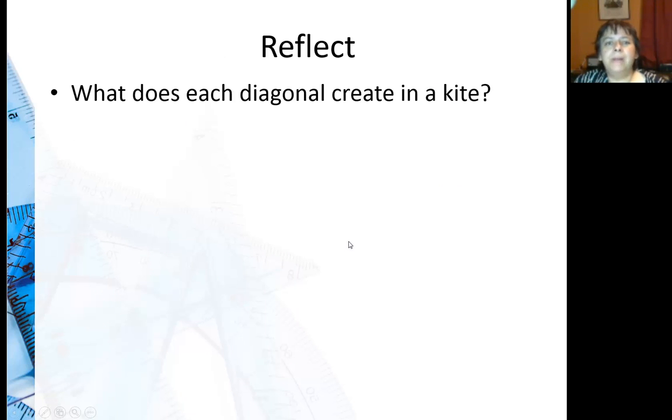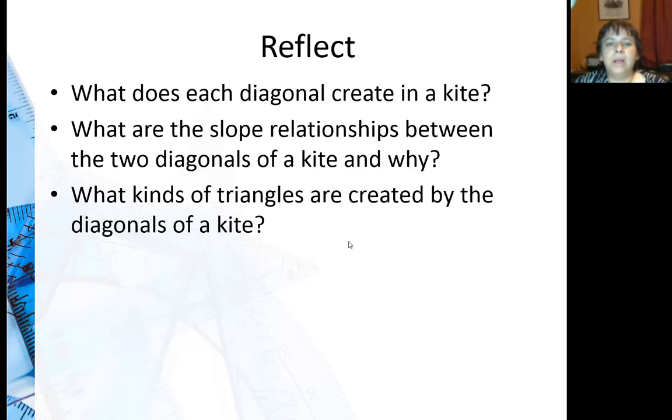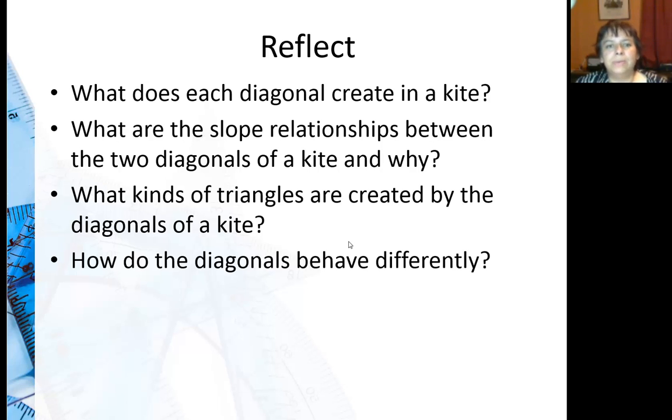So for further reflection, what does each diagonal create in a kite? One of them cuts the kite in half, the other one creates isosceles triangles. And you put them together, and you have congruent right triangles. What are the slope relationships between the two diagonals of a kite and why? Well since they're perpendicular, their slopes should be negative reciprocals. What kinds of triangles are created by the diagonals of a kite? Well again, we said one does isosceles triangles, not congruent, and one does congruent triangles. And how did the diagonals behave differently? Again, kind of going back to that previous question.